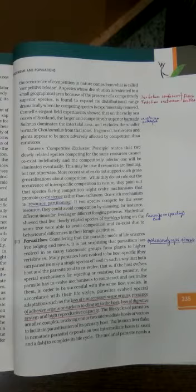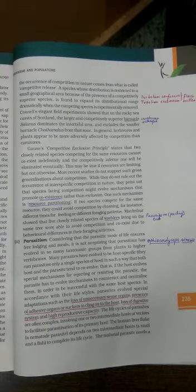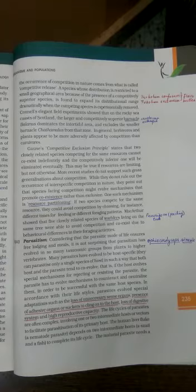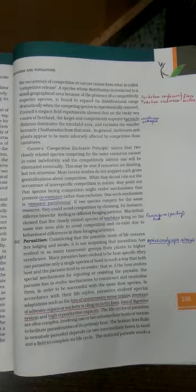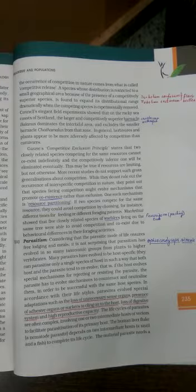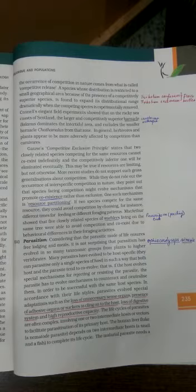Considering that the parasitic mode of life ensures free lodging and meal, we all know parasite is a forceful interaction from one organism on another organism. The organism on which a parasite survives is called the host. Parasitic mode of life provides two benefits: first, it gets a free place to live in and free meal also. It is not surprising that parasitism has evolved in so many taxonomic groups from plants to higher vertebrates.